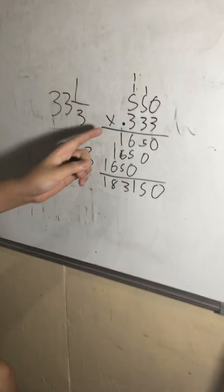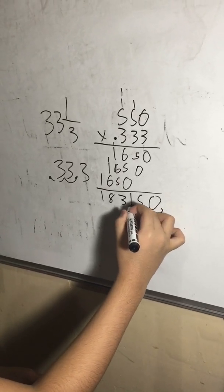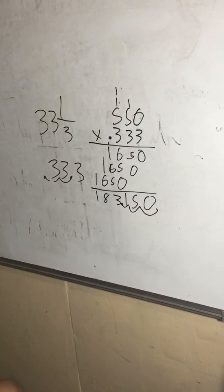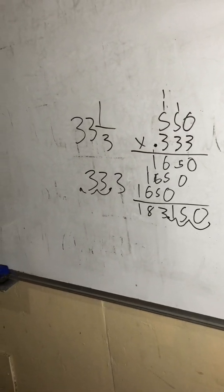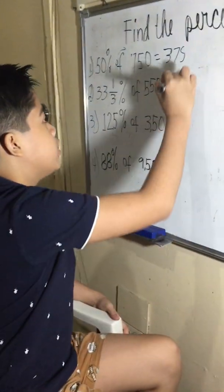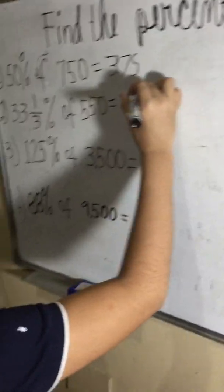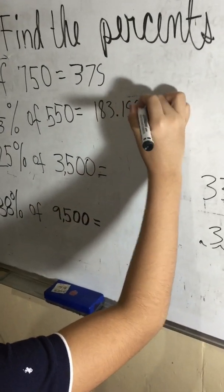Since there are three decimal places, we move this three times to the left. So 33 and 1/3% of 550 would be 183.15.